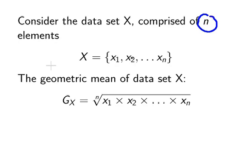We have the first element, second element, and so on, all the way up to the Nth element. The geometric mean of the data set X is given as follows. This is how we would denote the geometric mean.